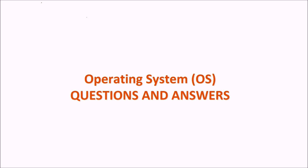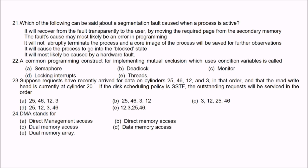Question 22: What can be said about a segmentation fault caused when a process is active? It will not recover from the fault transparently to the user by moving a required page from secondary memory — that is false. It will most likely be an error in programming — also not true. It will not abruptly terminate the process — also not true. It will most likely be caused by hardware fault — also not true. The correct answer is: it will abruptly terminate the process, and the core image of the process will be safe for further observation.